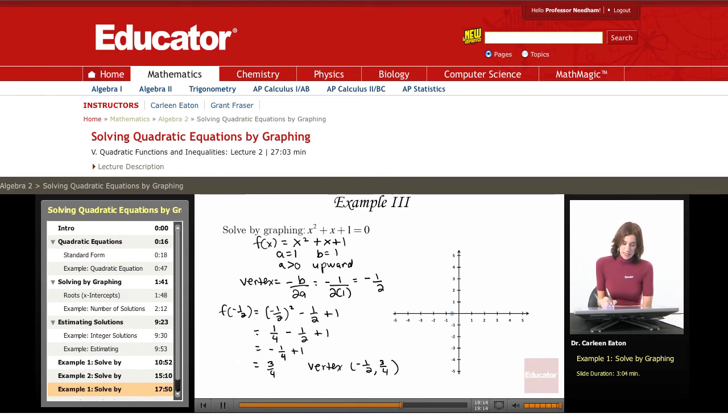That's approximately here. That's negative 1 half, and then 3 fourths is about here. Now, always, before you find points and waste time, stop and think about the shape and what type of solutions you're going to have based on the shape